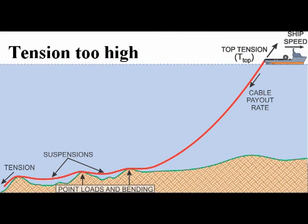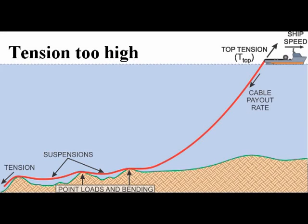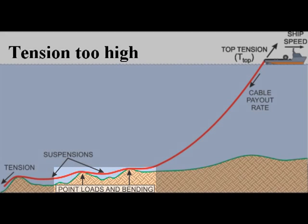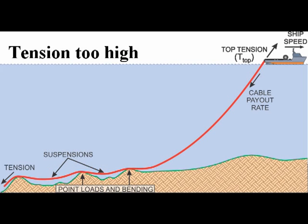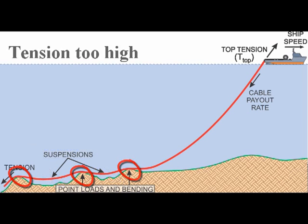Installing a cable with tension that is too high can result in cable suspensions between outcrops on the sea floor, leading to large point forces at the cable contact points. Cable suspensions also expose the cable to increased current and wave loading, which vibrates the cable, causing fatigue and abrasion at the heavily loaded contact points.